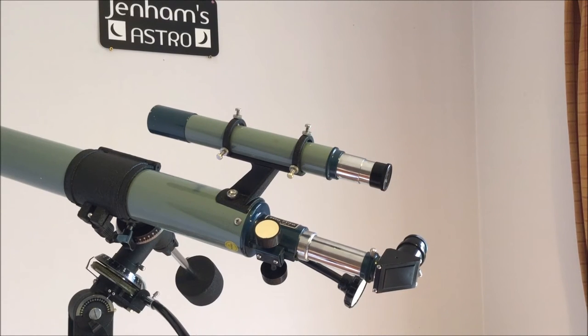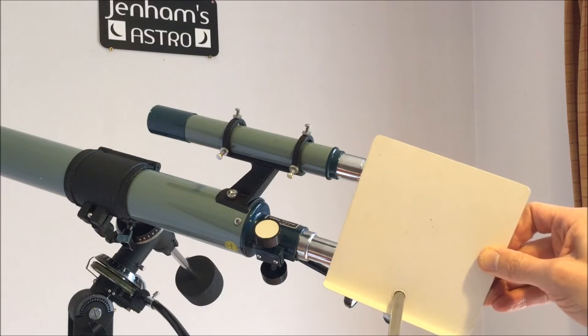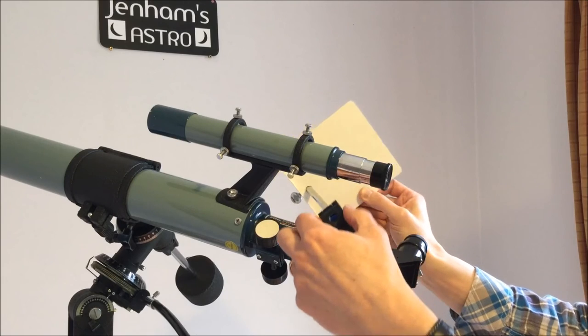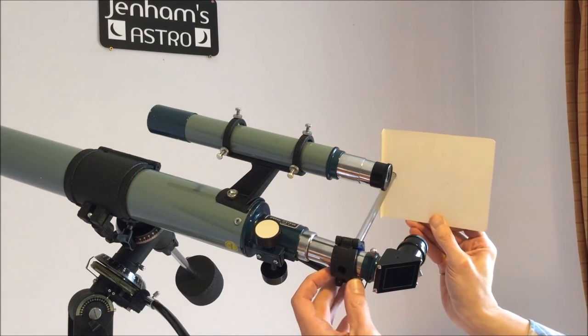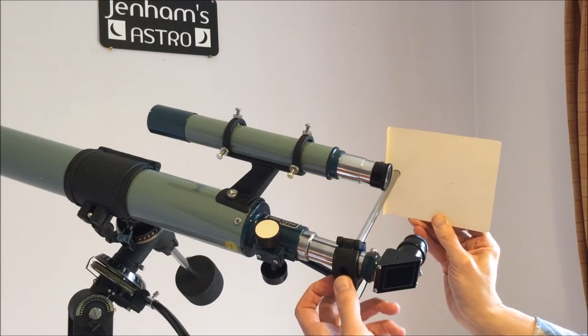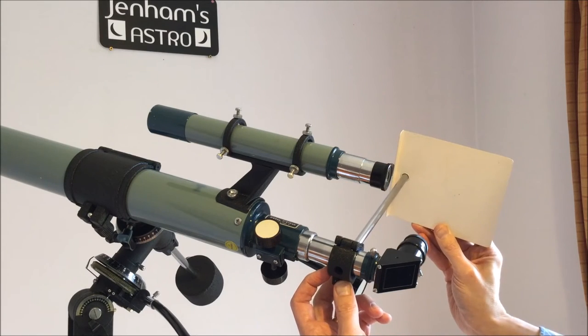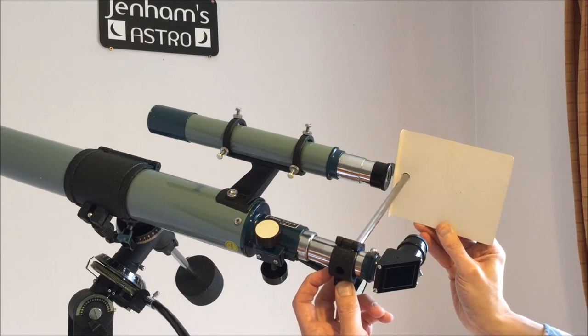So we haven't finished with the accessories yet. The scope came with a solar projection screen, and you can attach it to the eyepiece draw tube with this rather nice clamp, which is felt-lined. And then you can project the sun onto the white screen.